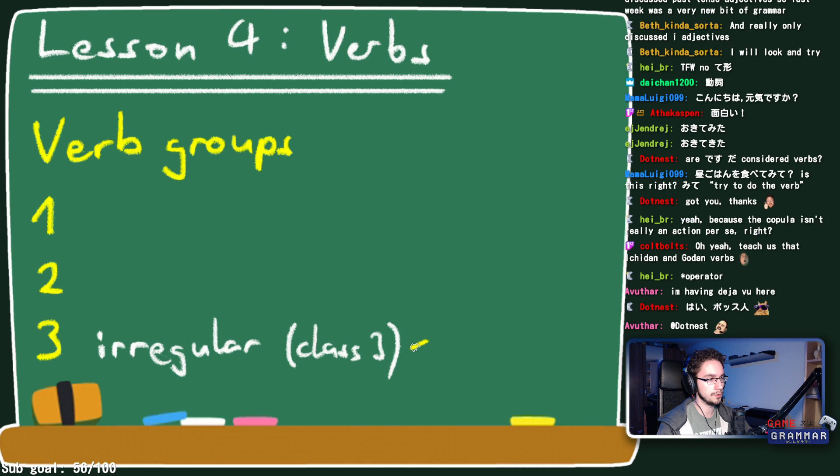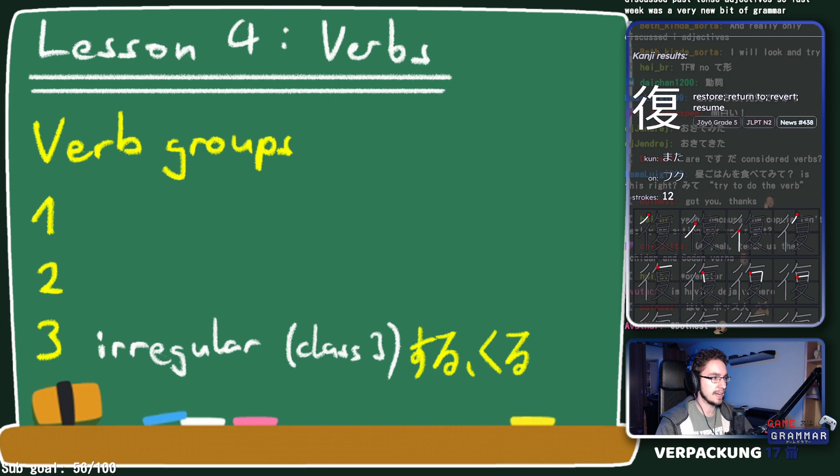There are only two irregular verbs and I can list them because it's easy. They are suru and kuru.